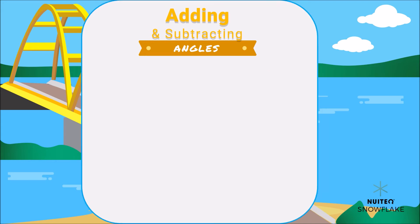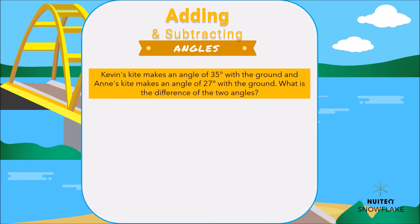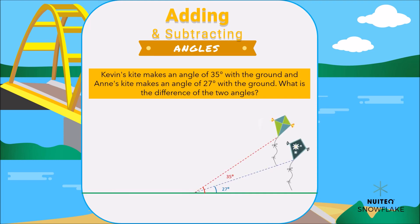Also, we can use these concepts in real world situations. For example: Kevin's kite makes an angle of 35 degrees with the ground, and Ann's kite makes an angle of 27 degrees with the ground. What is the difference of the two angles? We just need to subtract both angles. The answer is 8 degrees.